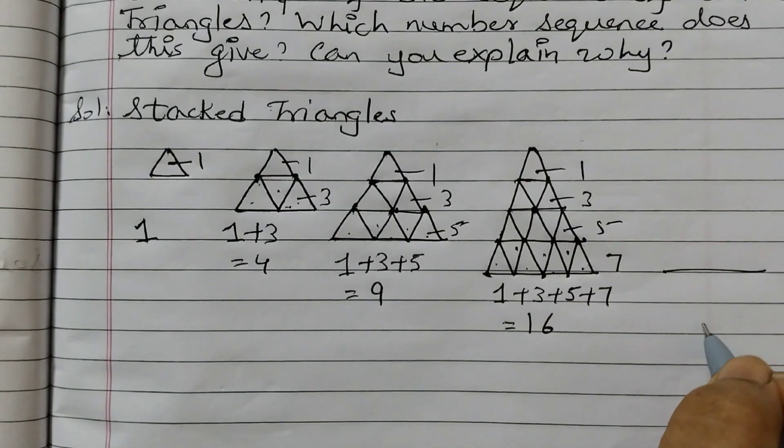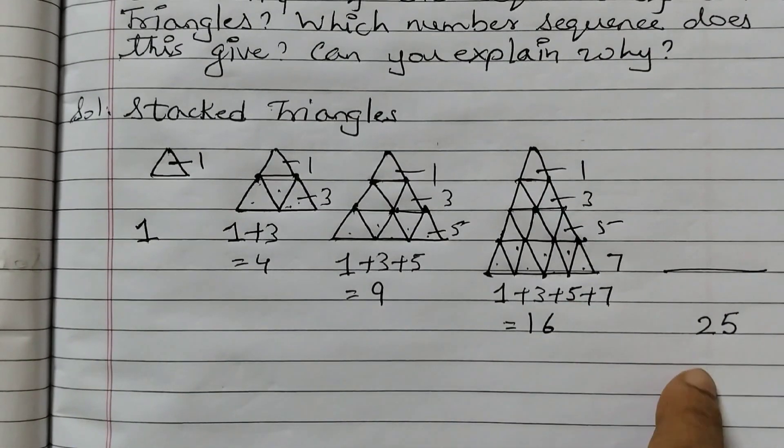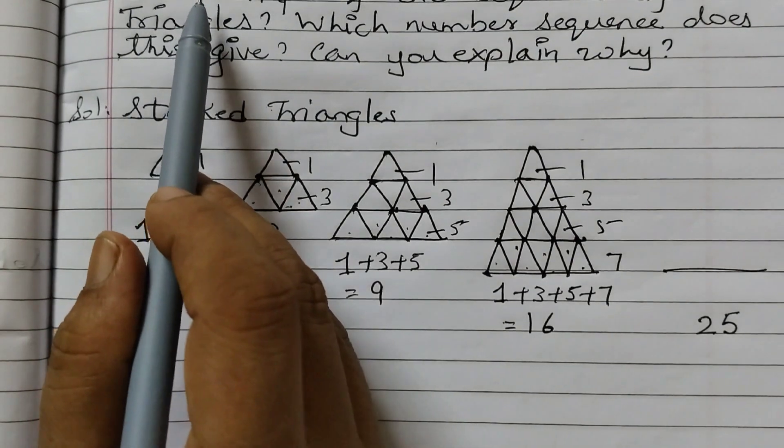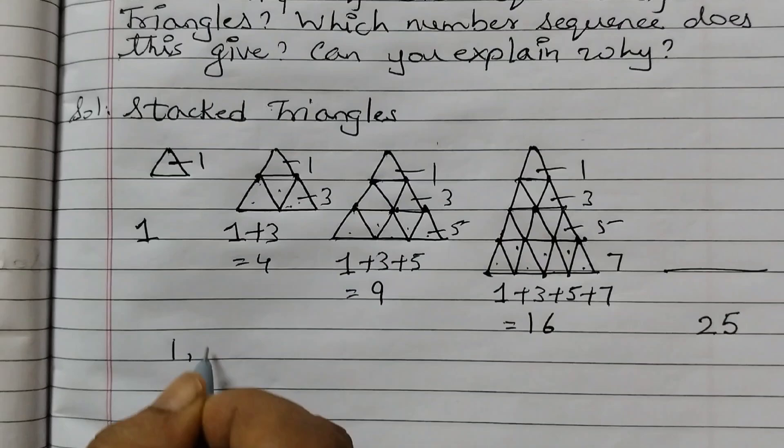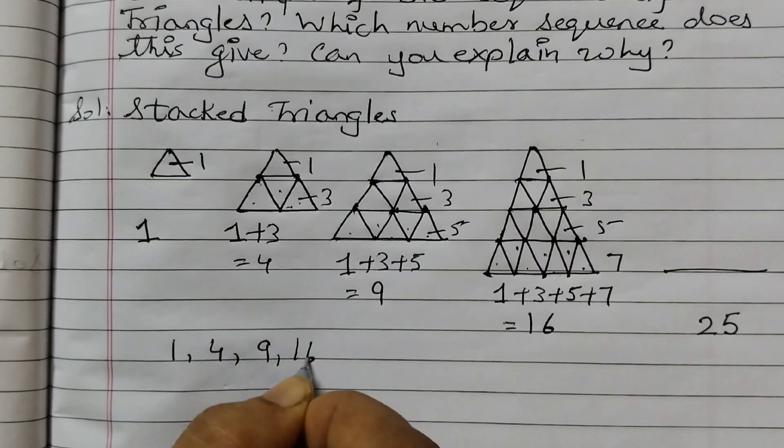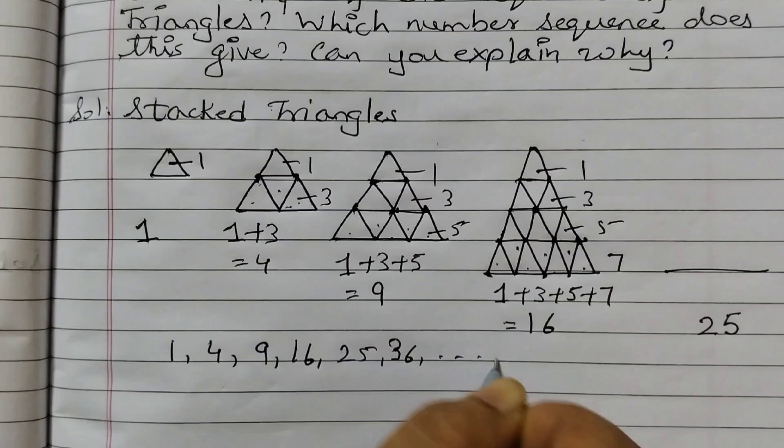Because we are getting all square numbers. So the first part of the question, how many little triangles are there in each shape, we have done that: 1, 4, 9, 16, 25, 36, and so on.